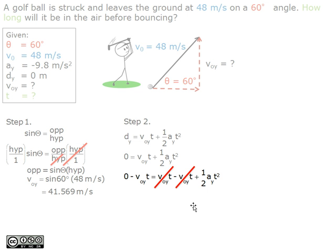The vt on the right side cancels each other out, and we are left with negative vt equals one-half at squared.